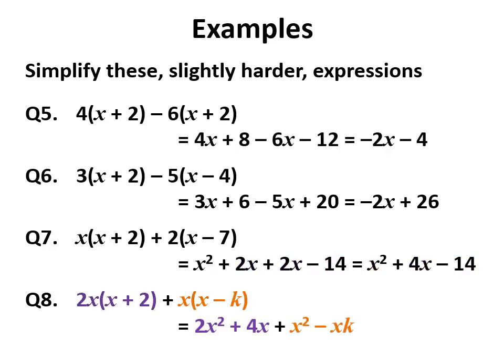And last one: expand the brackets as we have each time, because BEDMAS says we do brackets first. 2x times x is 2x squared. 2x times 2 is 4x. x times x is x squared. x times minus k is minus xk. And then we add the like terms. We can add this x squared and this x squared to give us three of them. The 4x and the minus kx stay as they are; they're not like the other terms.